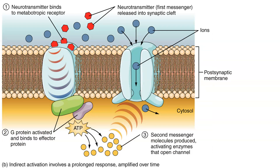The other type of receptor is called a metabotropic receptor. Instead of serving as an ion channel, it activates a signaling pathway — also known as a secondary messenger system — that causes nearby ion channels to open. We won't get into much detail about this, as we've already learned the concepts that allow you to explore this in further detail.